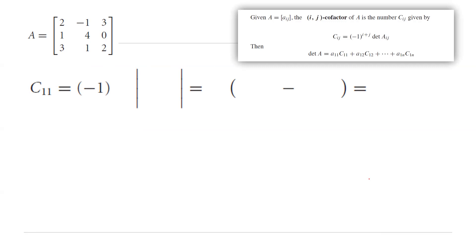Based on the formula, it is negative 1 raised to some exponent, which is i plus j. But i is 1, j is 1, so the exponent is 1 plus 1, multiplied by the determinant of the matrix 4, 0, 1, and 2, which is basically just right here.